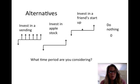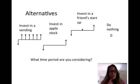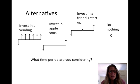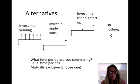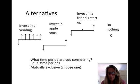The question is what time period are you considering? When you're comparing something, you need to decide: for how long am I going to be looking at doing this investment? Is it going to be six years, three years, or one year? Decide that ahead of time and then compare the alternatives on that time period. They have to have equal time periods when comparing them, and most of the time they should be mutually exclusive — we choose one of them.